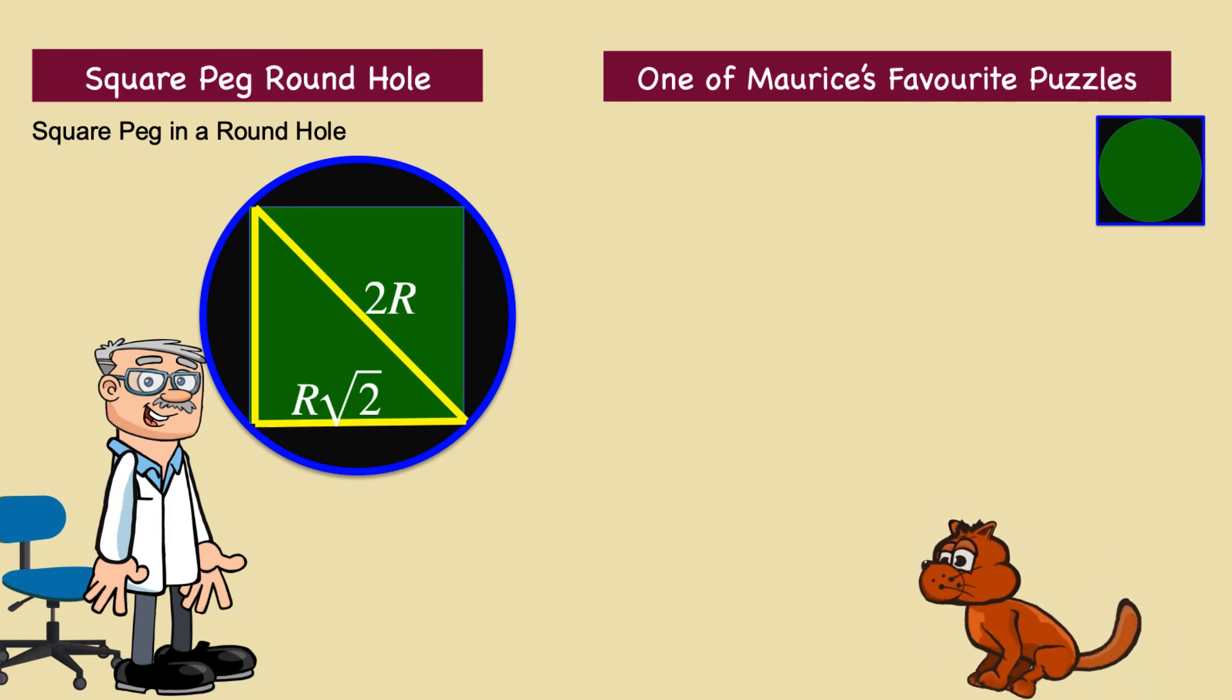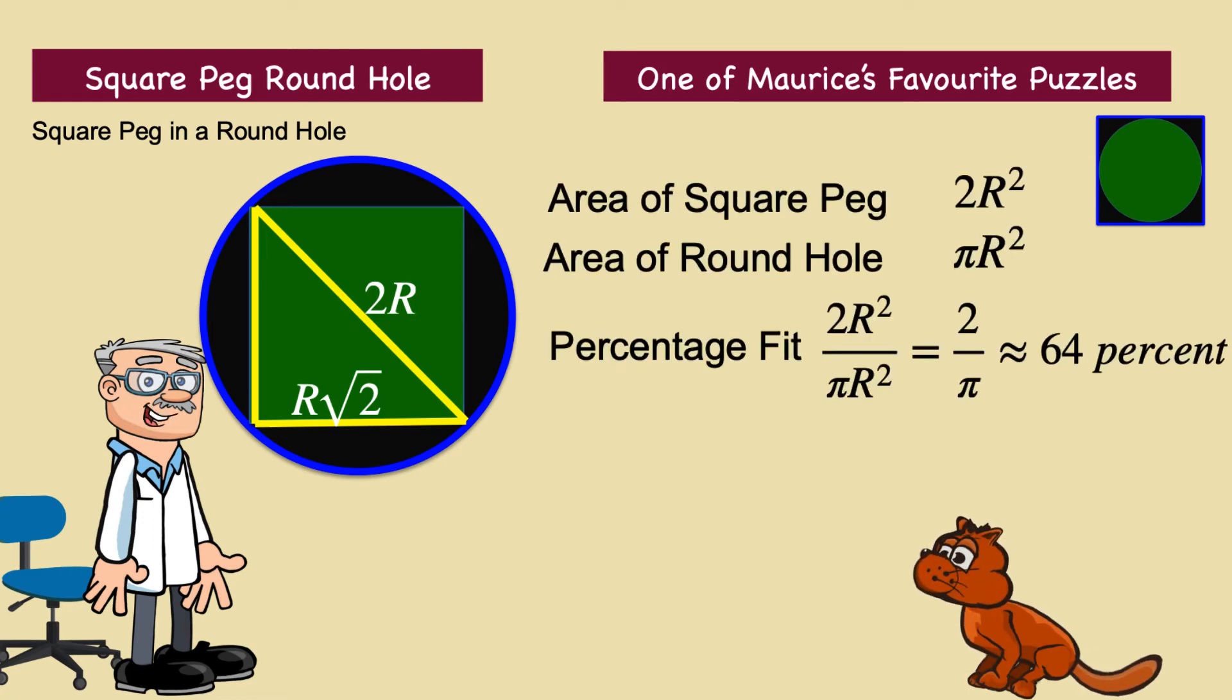The square's area is the square of the side, so it is 2r squared. This is to be divided by the circle's area, pi r squared. The ratio of the square peg's area to the round hole is 2r squared divided by pi r squared, which equals 2 over pi, which is around about 64%.